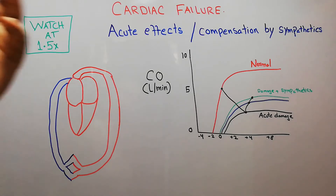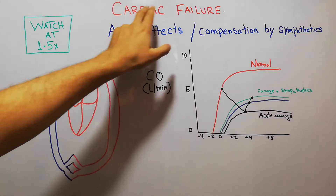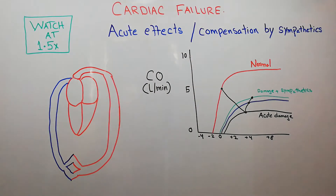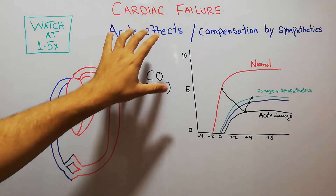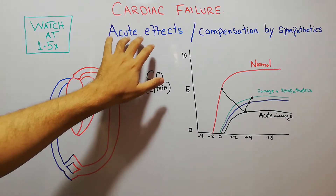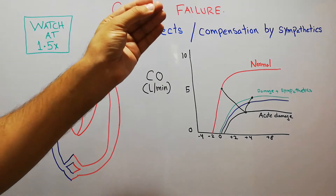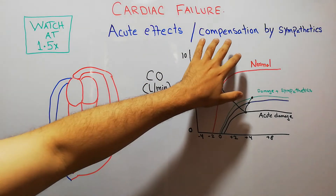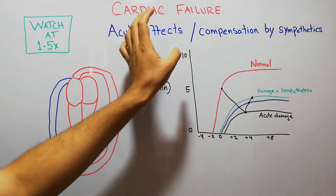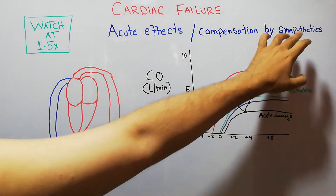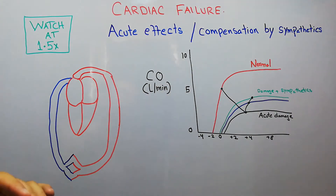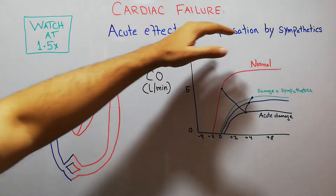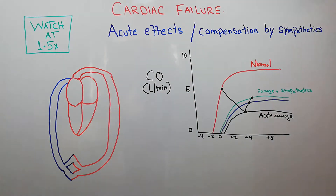Today we are going to start our new chapter about cardiac failure. The first topic we are going to discuss is the acute effects of moderate cardiac failure and the compensations of acute cardiac failure by the sympathetic system.